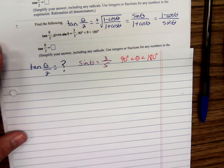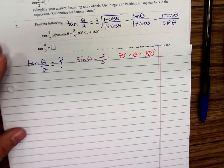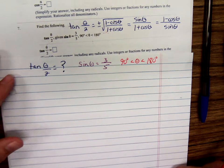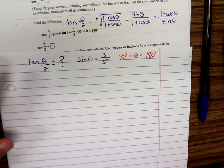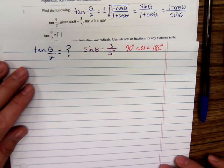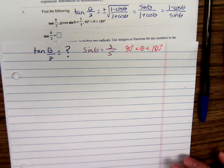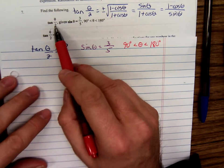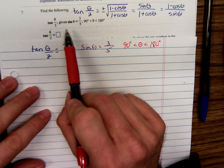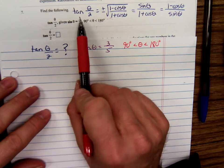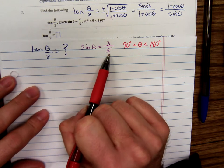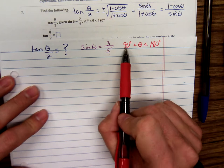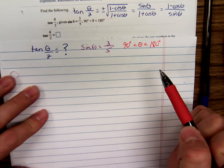This is Anthony Purcelli doing some trigonometry with my trig class. I'm going to do this one here. It says find the following: find tangent theta over 2, given that sine theta is 3 fifths, and theta's between 90 degrees and 180.